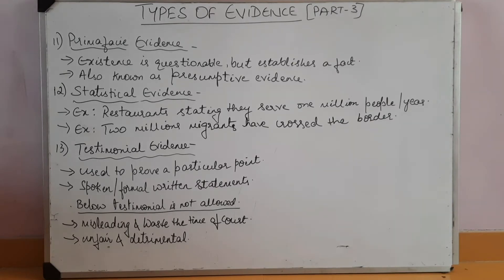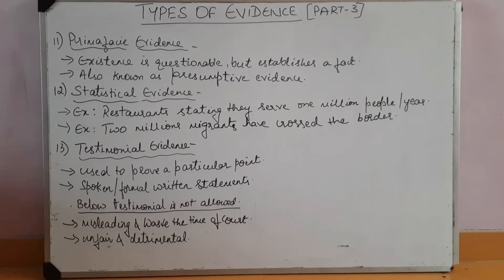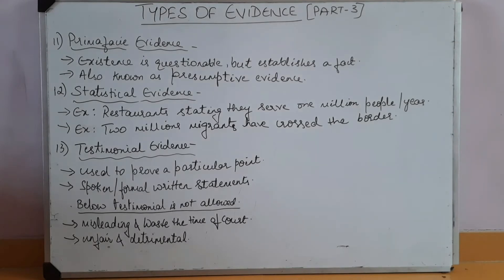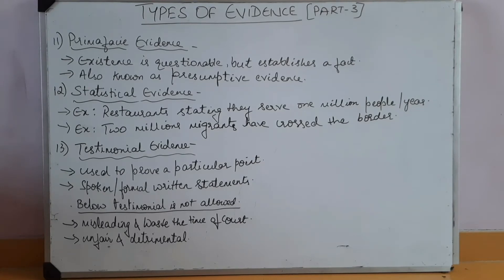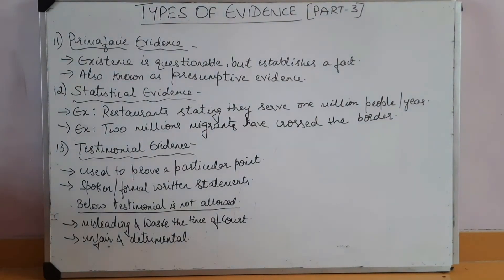The 11th type of evidence is prima facie evidence. Prima facie evidence refers to evidence whose existence is questionable but at the same time it establishes a fact. The existence of such evidence cannot be questioned until it is rebutted. It is also called presumptive evidence, as it is sufficient to raise a presumption of the truth of a fact until and unless it is argued and rebutted. Such evidence is sufficient to establish a basic fact.